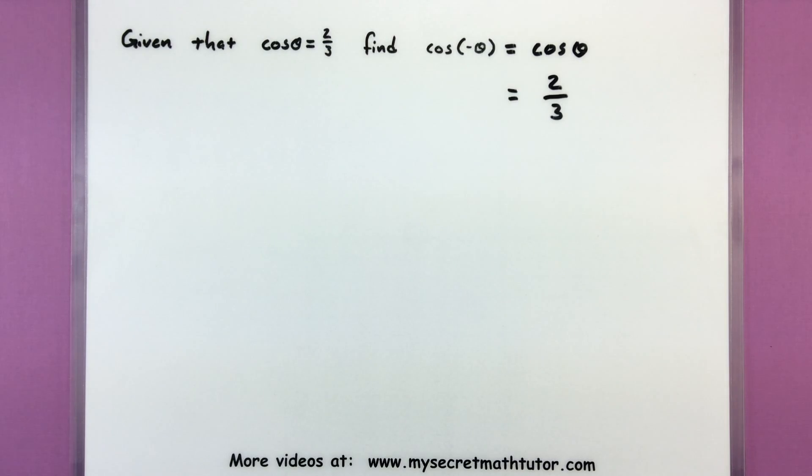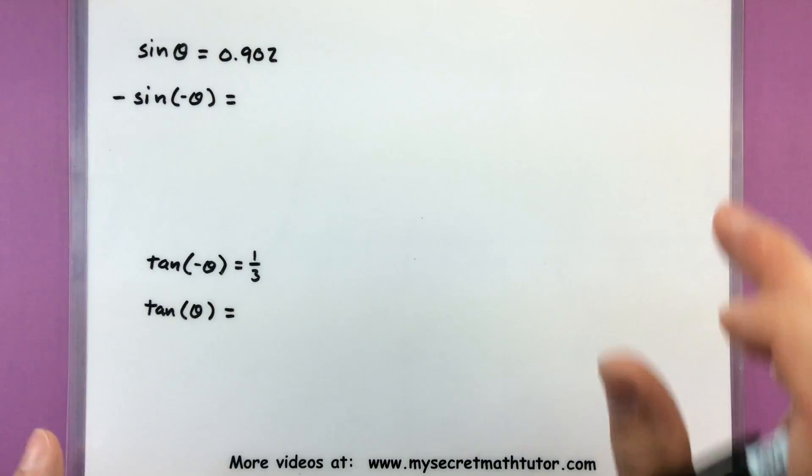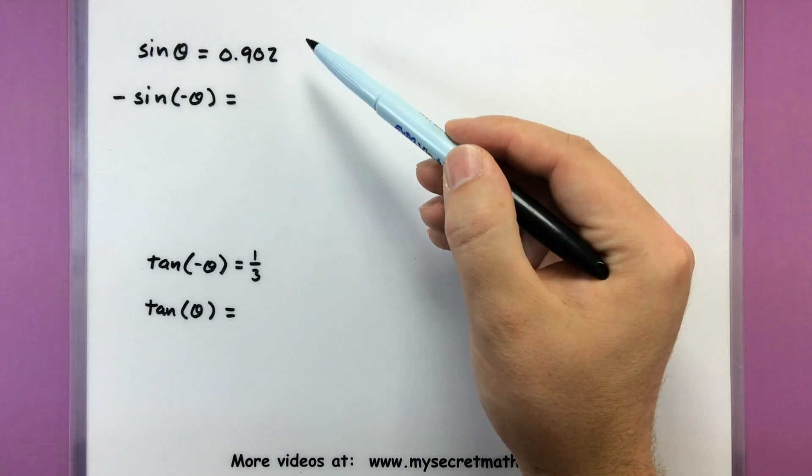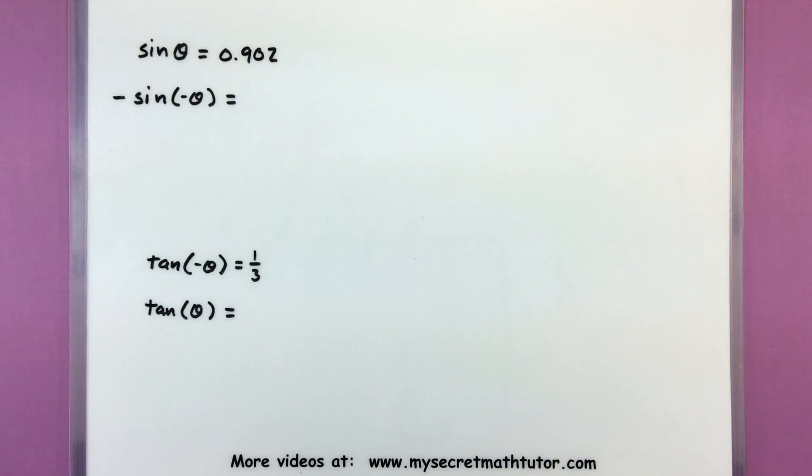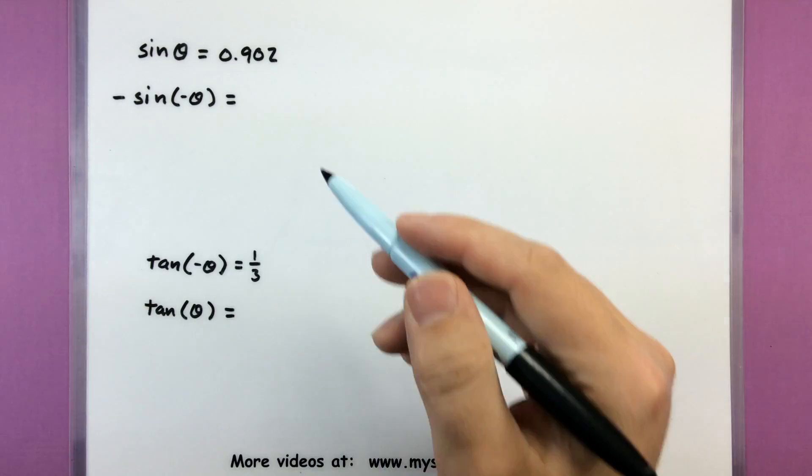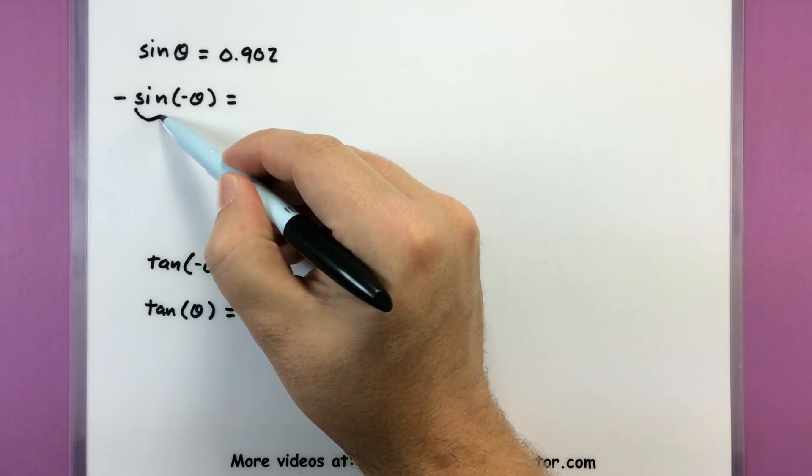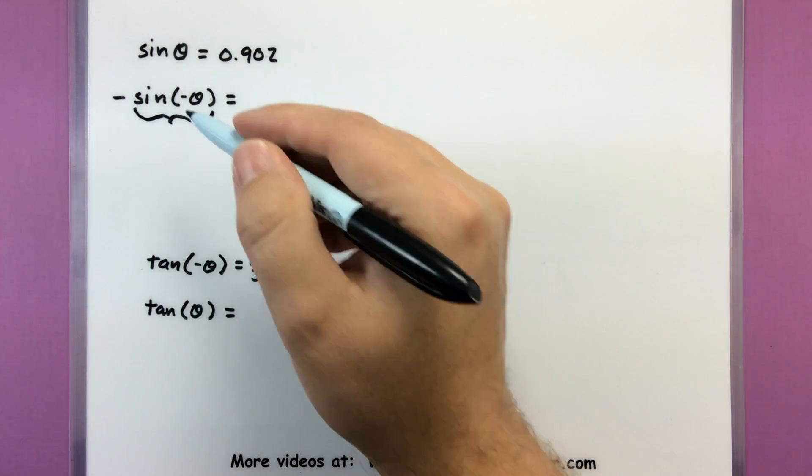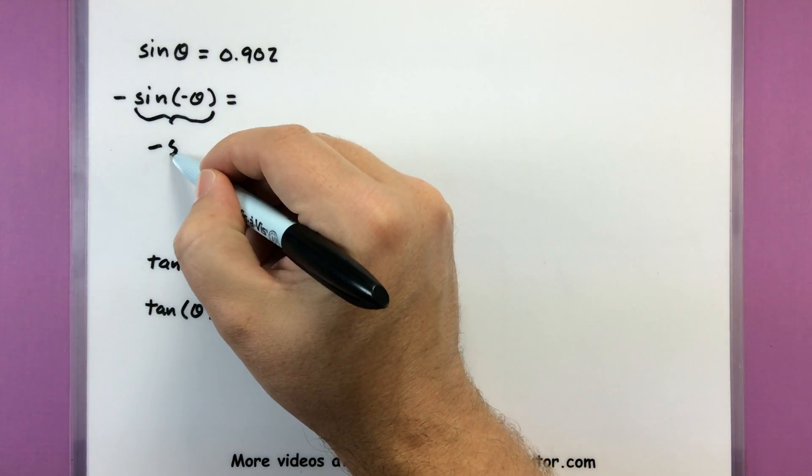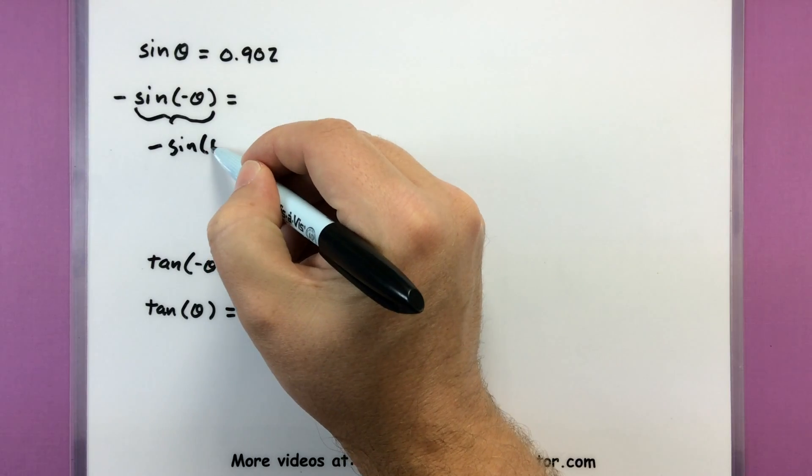Let's try a few more of these to make sure that we understand what we're looking for. In this one, I'm given that sine of theta is 0.902, and I'm looking for negative sine of negative theta. So this one has a lot going on for it. But let's just first replace this part of it. That's another one of my identities. So this would equal negative sine of positive theta.